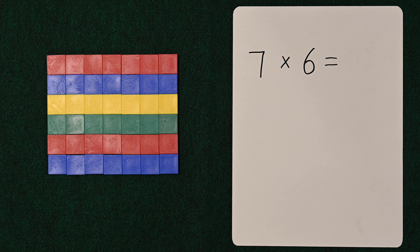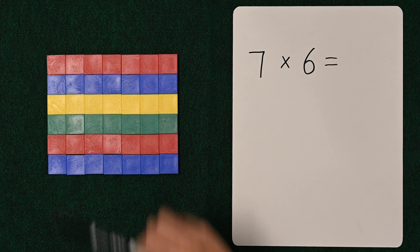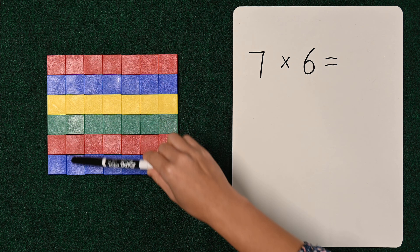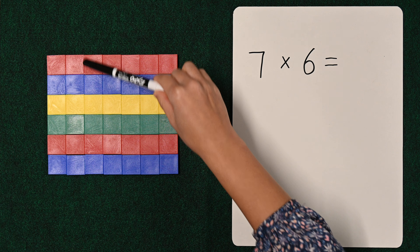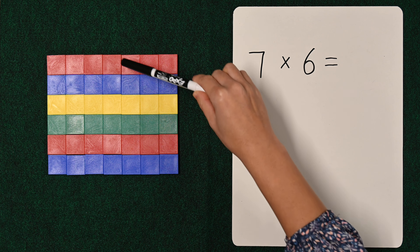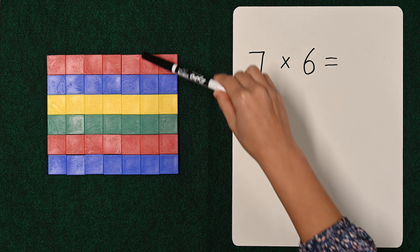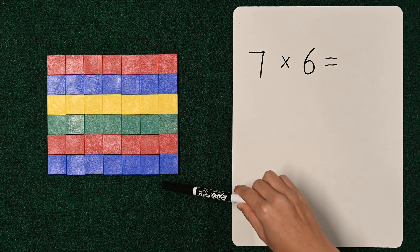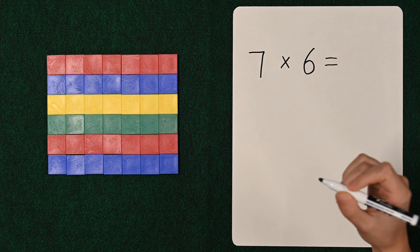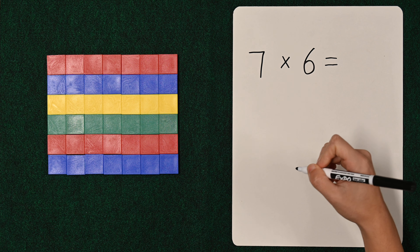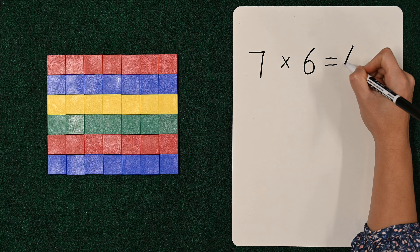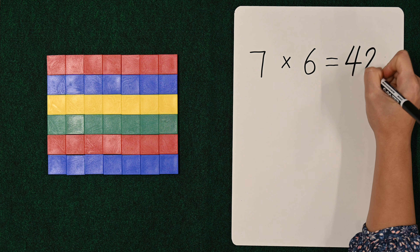Let's count by sixes and see if it's the same. Six, twelve, eighteen, twenty-four, thirty, thirty-six, forty-two. So if it's seven sixes or six sevens, either way it is forty-two.